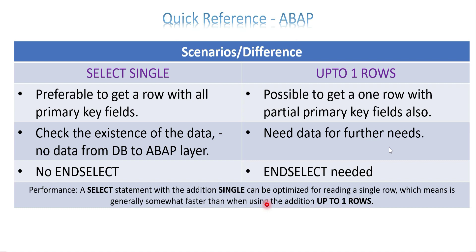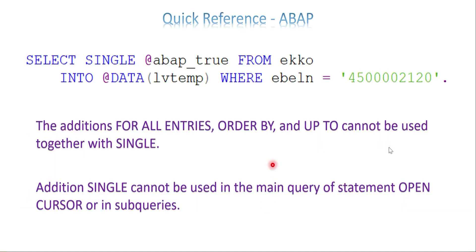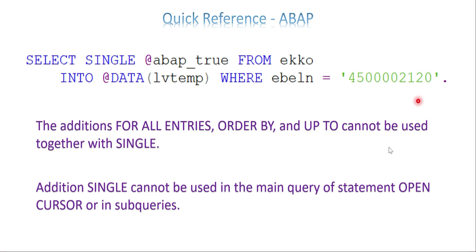Here's how to check the existence of a record using SELECT SINGLE: you write SELECT SINGLE @ABAP_TRUE FROM ekko INTO DATA and assign it to a local variable. That variable will hold the value of X or an empty space, because ABAP_TRUE is a boolean data type. This is just checking the existence of data — it does not bring any related record information back to the application layer.